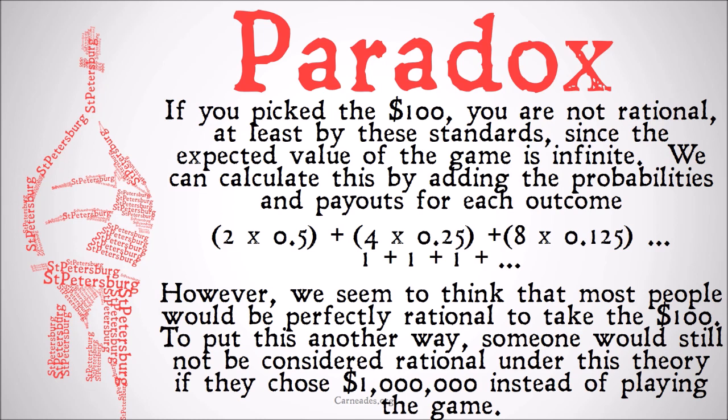We can calculate the expected value by adding the probabilities and payouts for each outcome. You have a probability of 50% of making at least $2, a probability of 25% of making at least $4, and so on. When we add all of these probabilities up, we get an infinite amount — we're adding $1 plus $1 plus $1 and so on. Because there is a non-zero possibility of never getting a tails, you always have an infinite benefit.